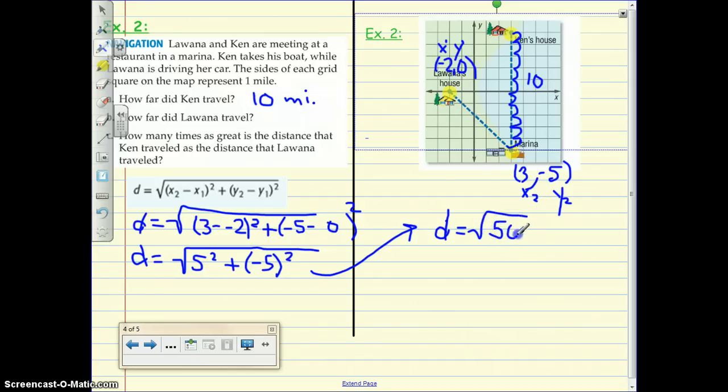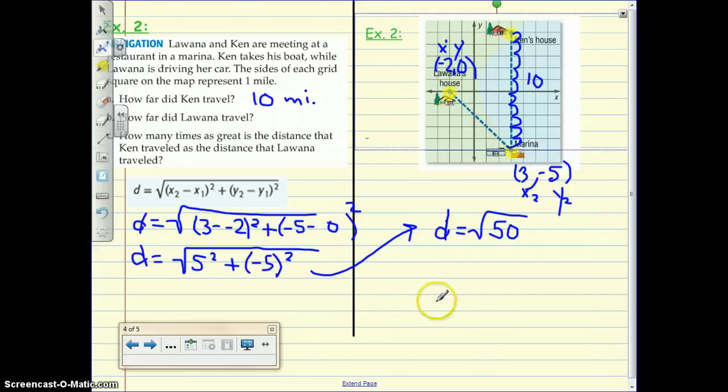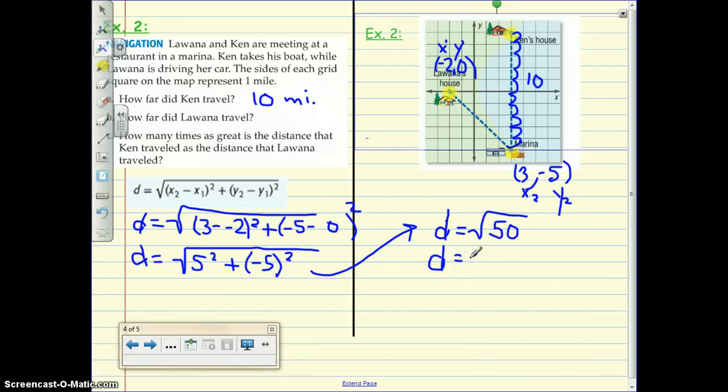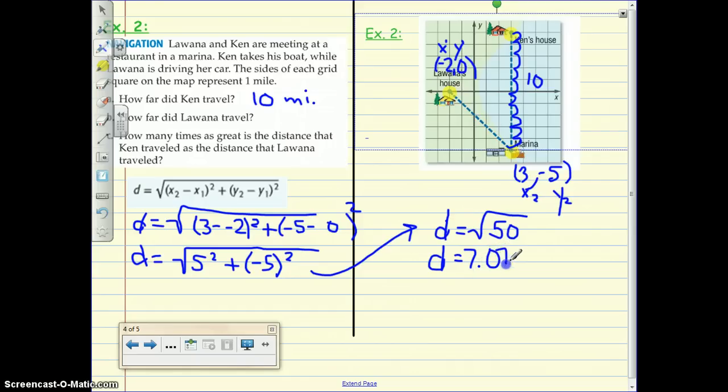So this is the same thing as 25 plus 25, which is 50. And the square root of 50, well, the square root of 49 is 7. So I know it's going to be 7 point something. Let me see if I can calculate this really quickly. If you wanted to find the decimal, it's 7.07 miles.